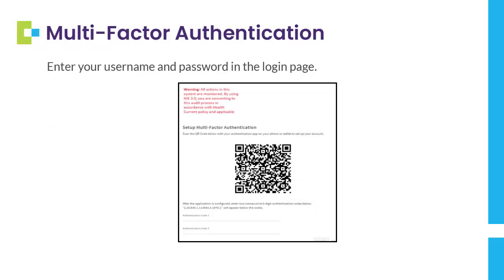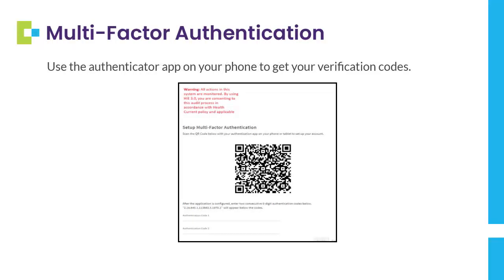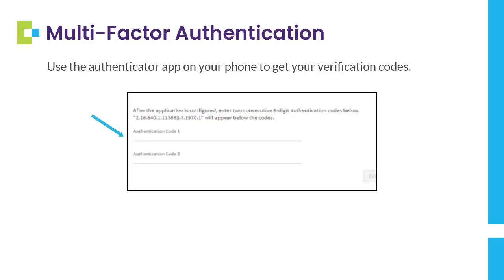Enter your username and password on the login page. Once you're logged in, you will see this screen. Use the Authenticator app on your phone to get your verification codes. After you have entered the first authentication code, you will need to wait until your authentication app generates the second authentication code in about 30 seconds. Once you input the second authentication code in the second line, you can enable your account.